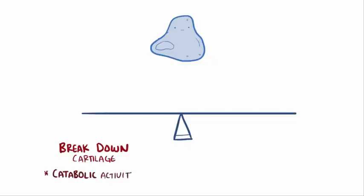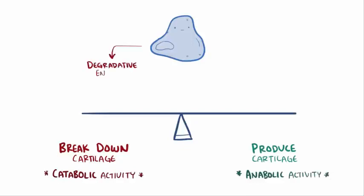So chondrocytes are important for the articular cartilage. In healthy people, chondrocytes maintain a delicate balance between breaking down old cartilage, called catabolic activity, and producing new cartilage, called anabolic activity, through the use of both degradative enzymes and synthetic enzymes.